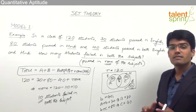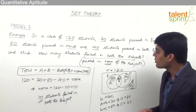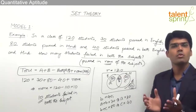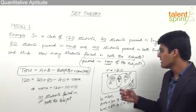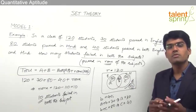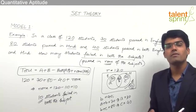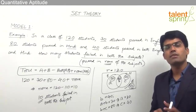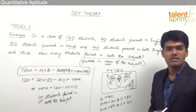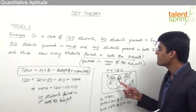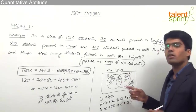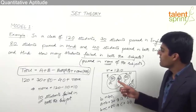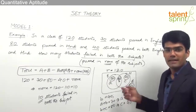How many students passed in more than one subject? More than one subject here can be only two subjects, so the answer is 40. If the question asks how many students passed in at least one subject — at least one means one subject or both subjects — the answer is 30 plus 40 plus 40, which equals 110. How many students passed exactly in one subject? Exactly one subject means either English or Hindi, so 30 plus 40 = 70.